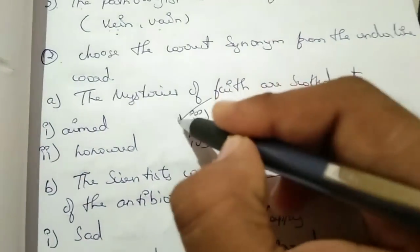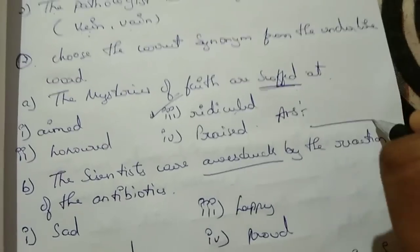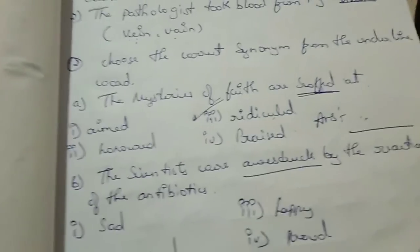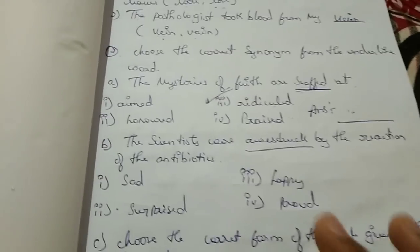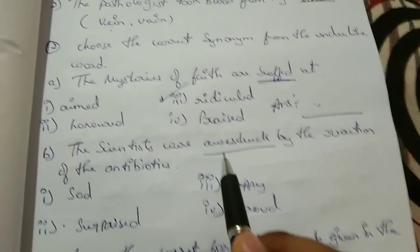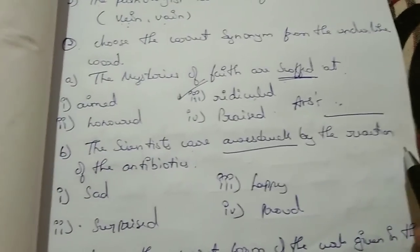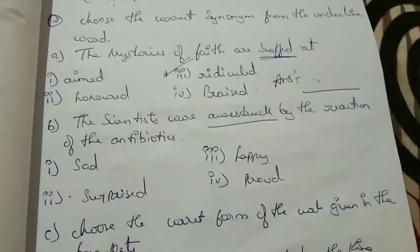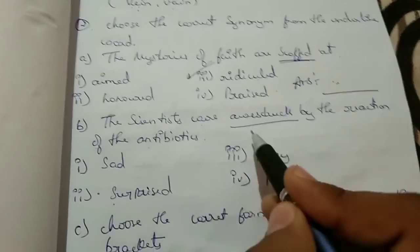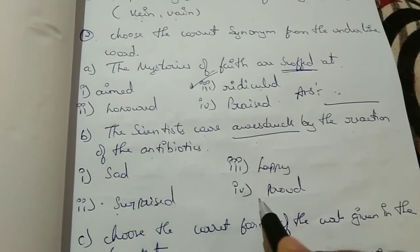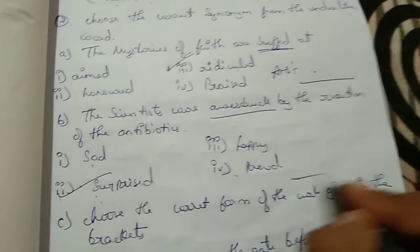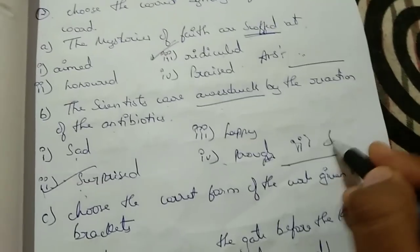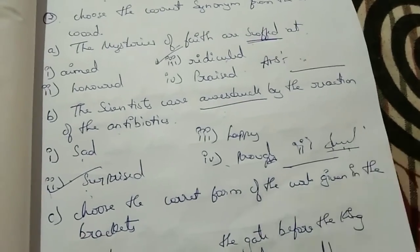Write this question, underline the answer mark, and write it clearly so the examiner knows you have identified the answer. Next example: 'The scientists were astounded by the reaction of the antibody in the text.' Here they were surprised — 'astounded' means surprised, not happy, proud, or sad. Write the answer as 'surprised.'